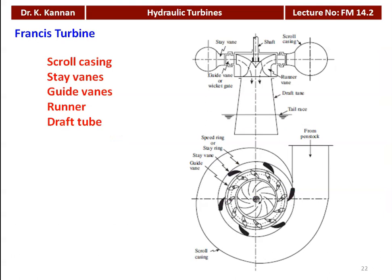Francis turbine was invented by Francis in the year 1847. Initially, the Francis turbine is an inward flow reaction turbine. Later on, it was modified as a mixed flow turbine. The water enters radially and leaves axially. What is shown here in the diagram is the mixed flow Francis turbine, that is the modified Francis turbine. The various components or parts of the Francis turbine are: scroll casing, stay vanes, guide vanes, runner, and the draft tube.